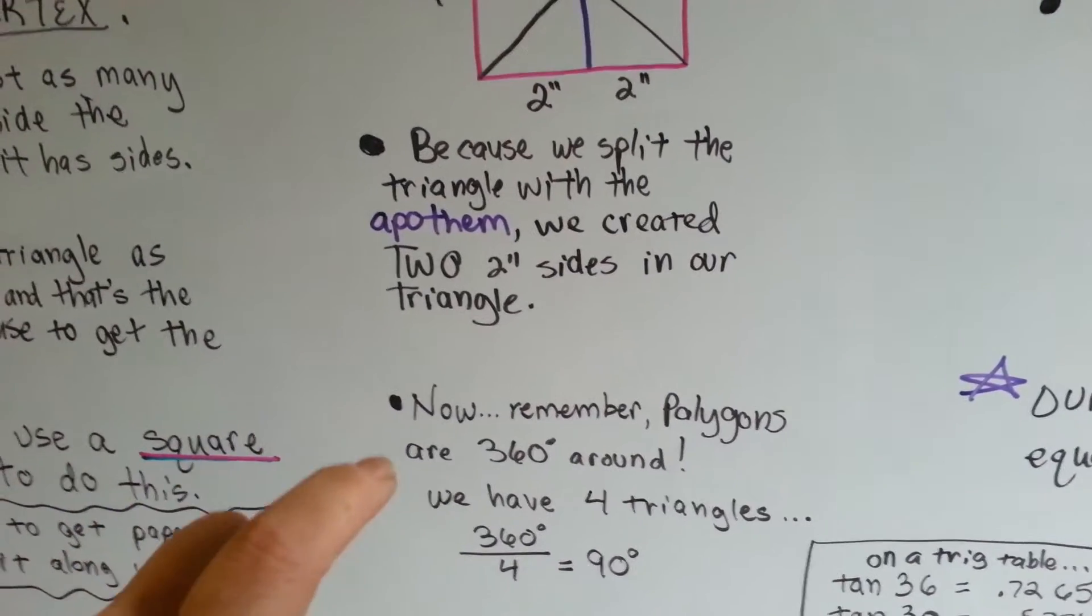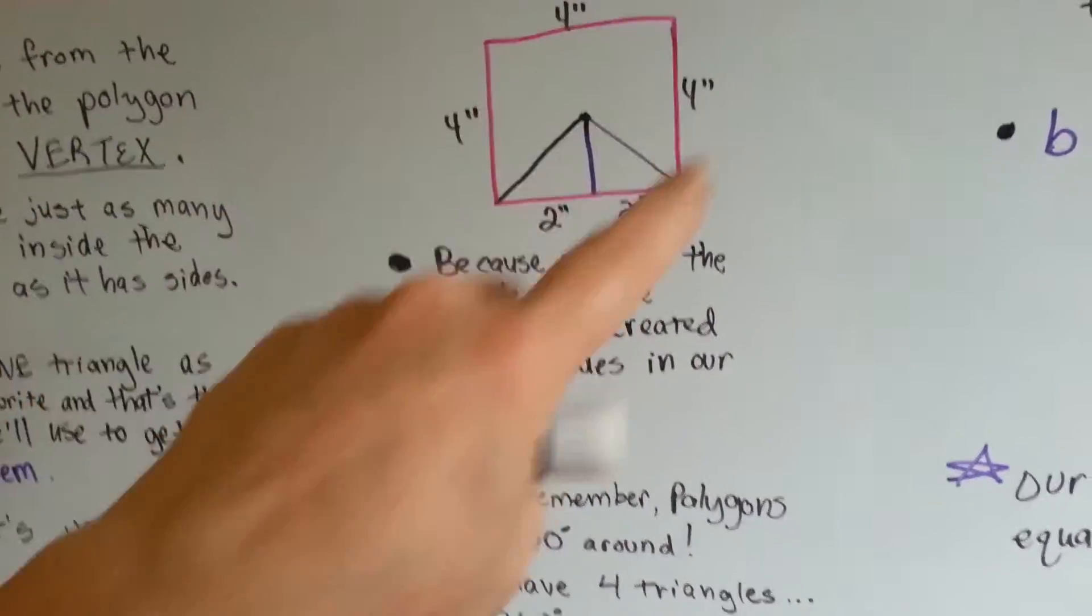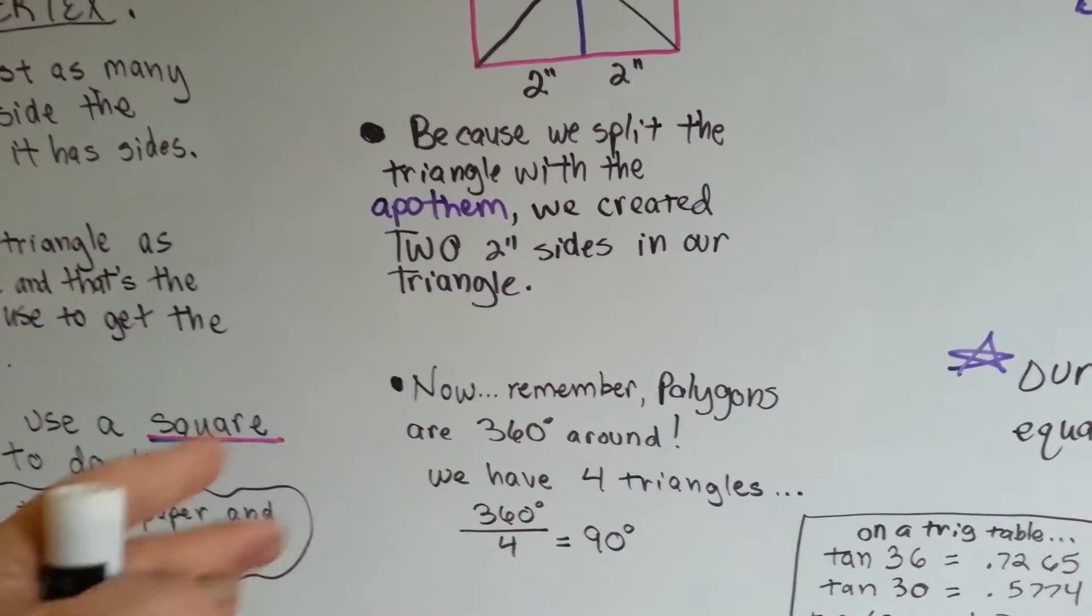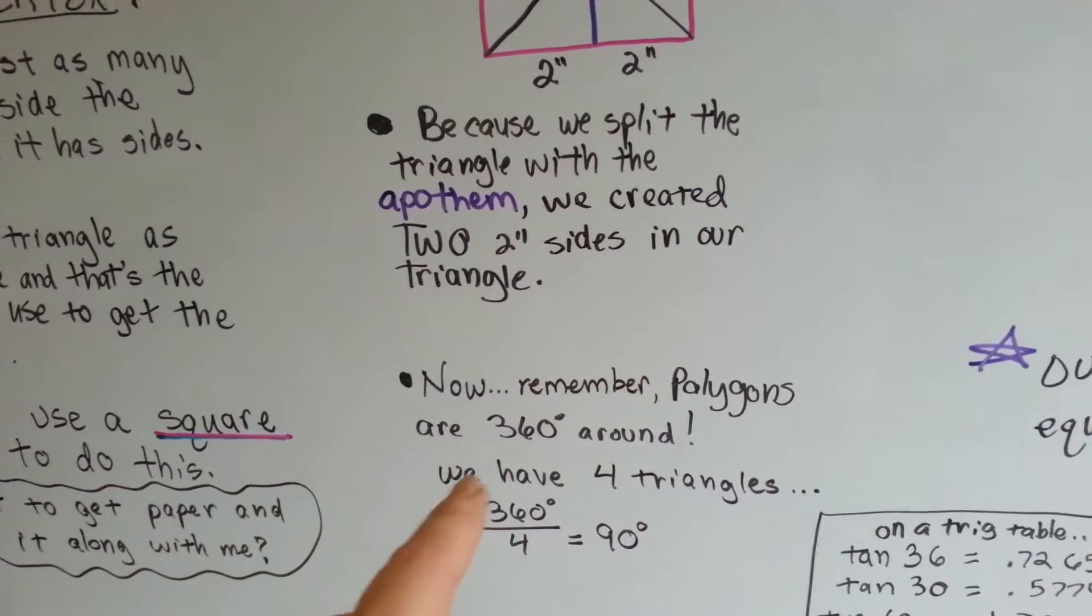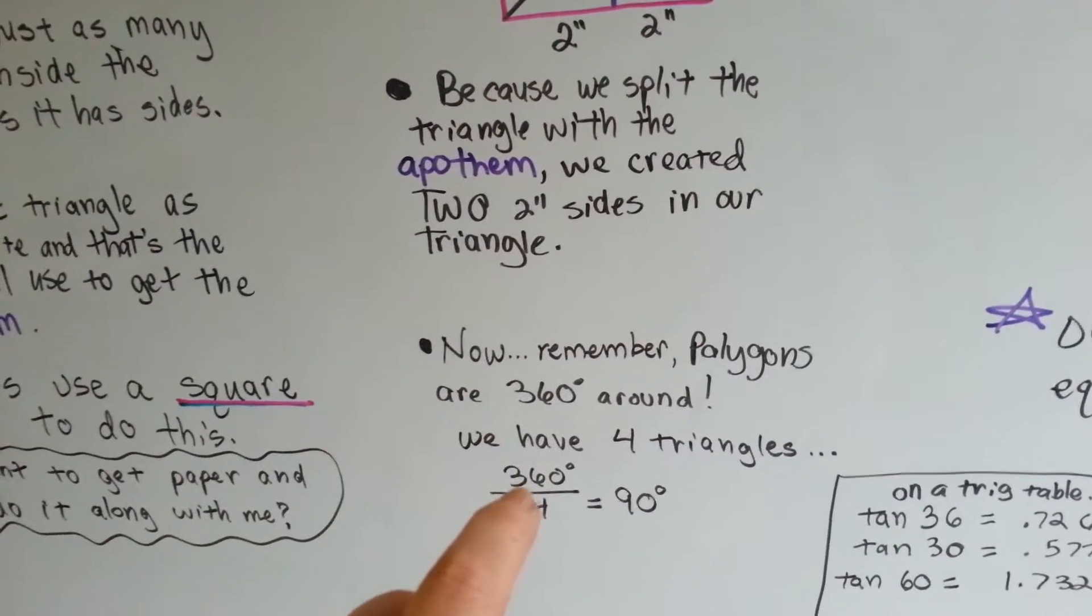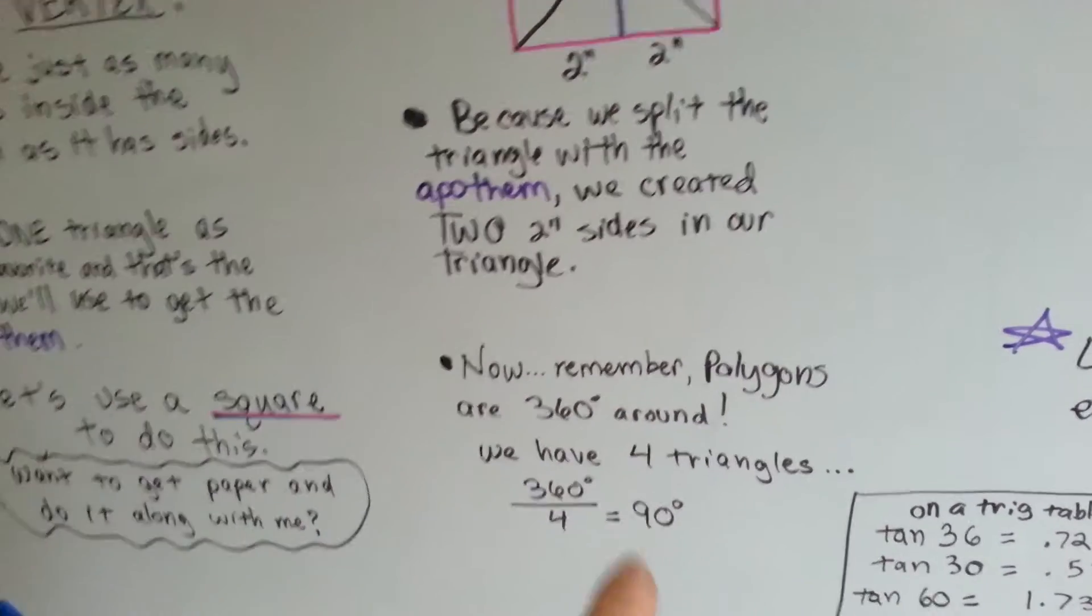Now, remember, polygons are 360 degrees around. Circles, even. But this square is 360 degrees around. A triangle is two. A pentagon is also. So, what we're going to do is, because we created these four triangles, we're going to divide that 360 by four, which is 90 degrees.